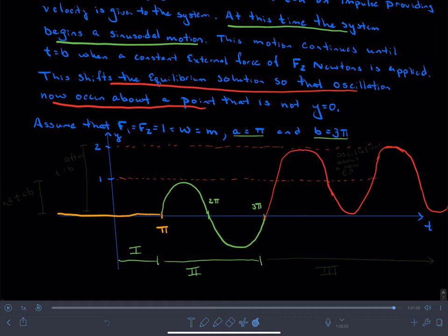and then from 3 pi onward, after I load up the system with an extra mass, or I could think about it as just tugging down on the system constantly with a downward force, what do I see? I see oscillations about a new equilibrium value, and here are these oscillations between 0 and 2.